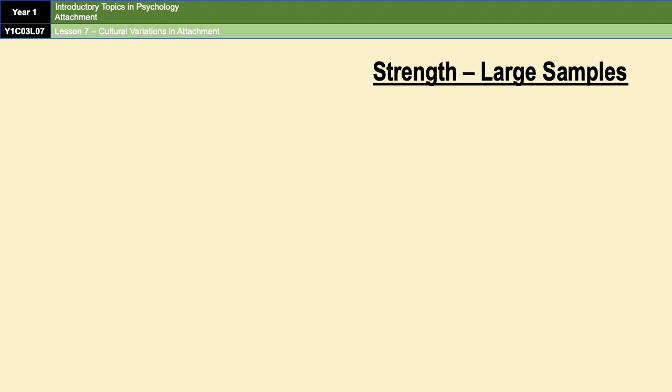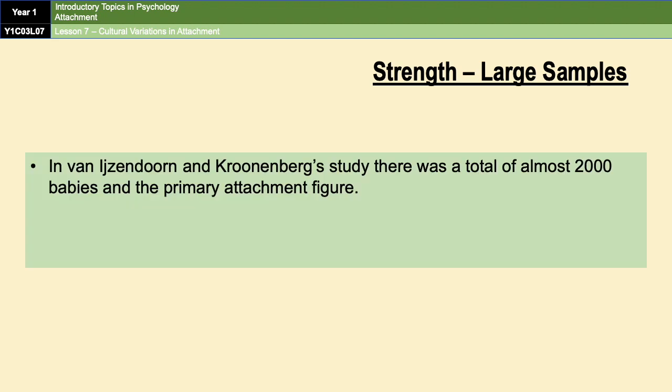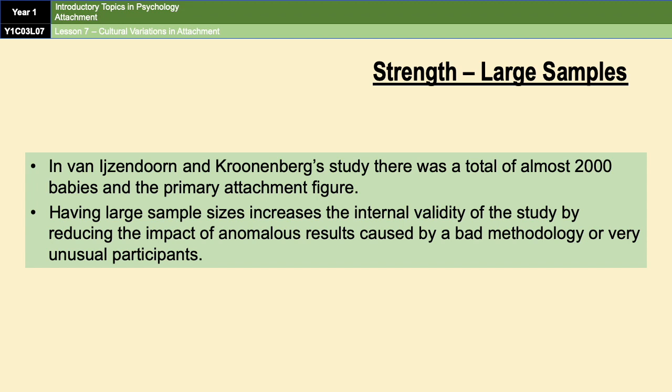A strength of Van IJzendoorn and Kroonenberg's study is that they had a very large sample — almost 2,000 babies and their primary attachment figures. Having large sample sizes increases the internal validity of a study because it reduces the impact of any anomalous results, which could be caused by bad methodology or very unusual participants. It's a short but by no means weak evaluation point.